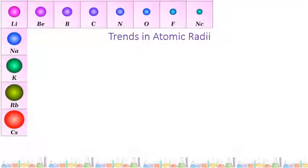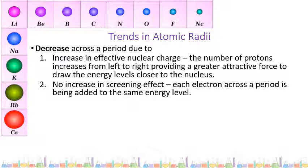Let's first look at the trend across a period. You can see from lithium to neon that the size of the atom decreases. The reason for this is there's an increase in effective nuclear charge because you're adding a proton each time. So the charge in the nucleus is stronger, which is going to pull those outer shell electrons closer into the nucleus, making the atom smaller. There's also no change in screening effect across the period because the electrons are all being added to the same energy level — there's no new energy level with electrons in it to block the positive charge from the nucleus.